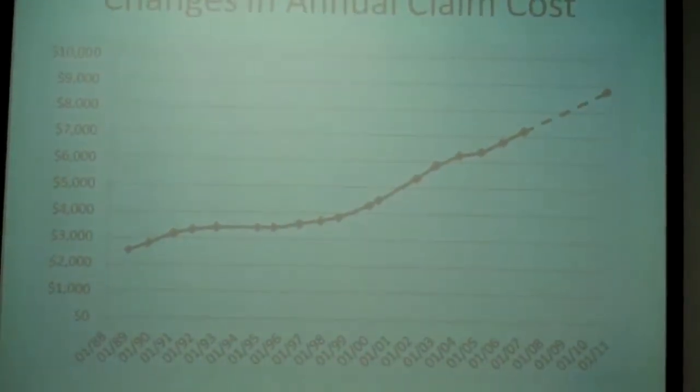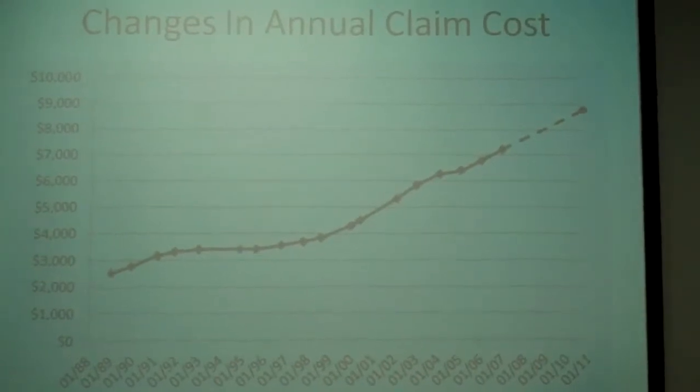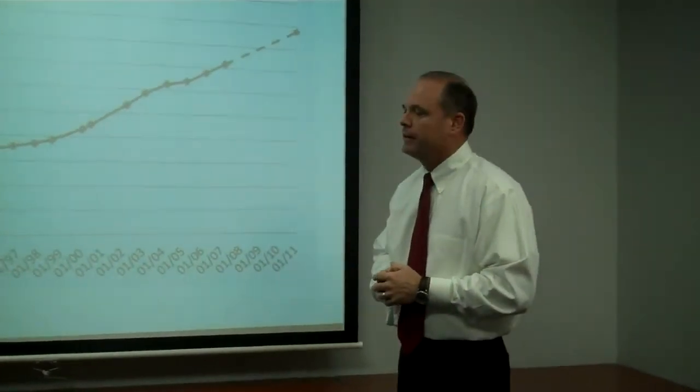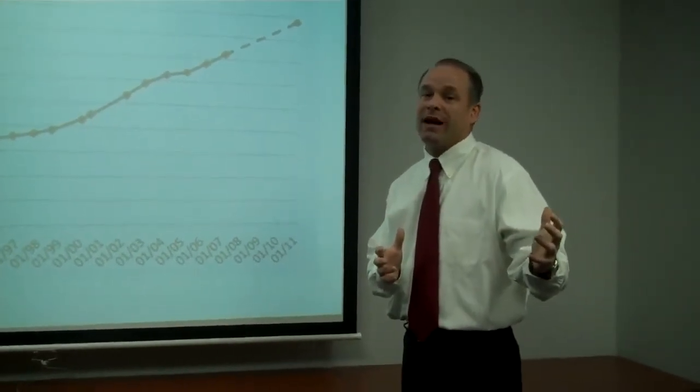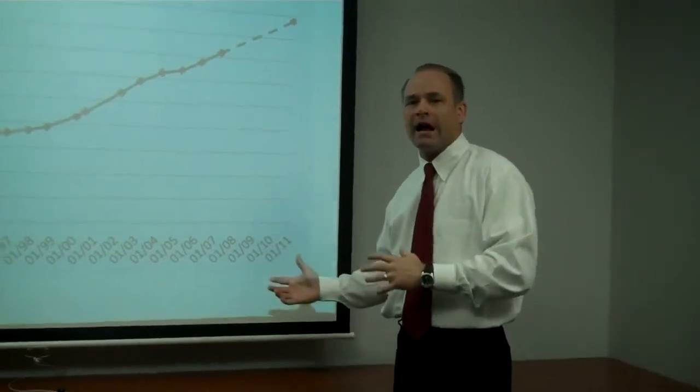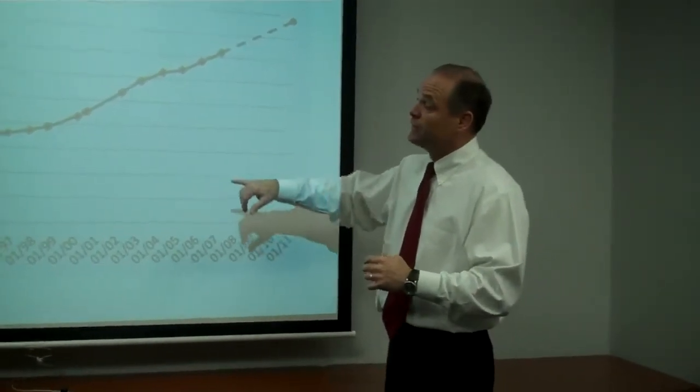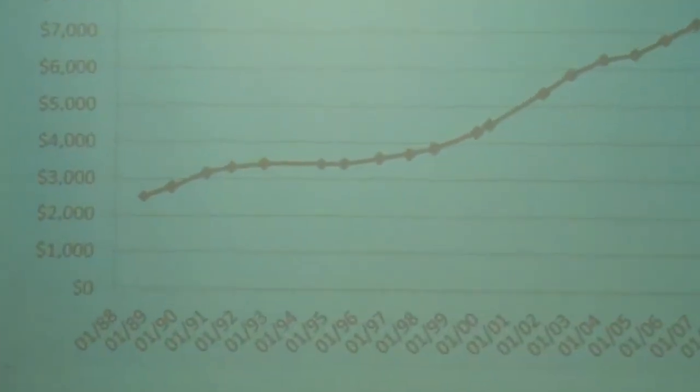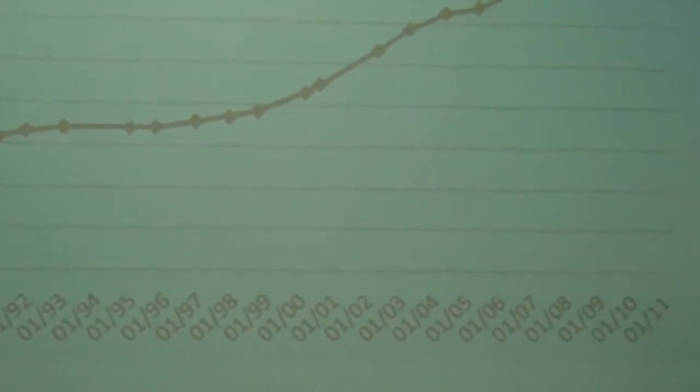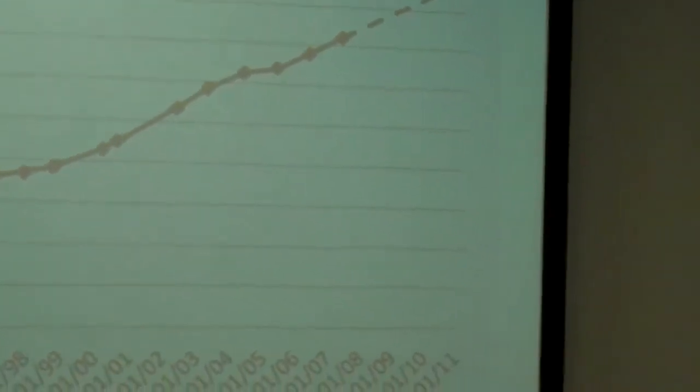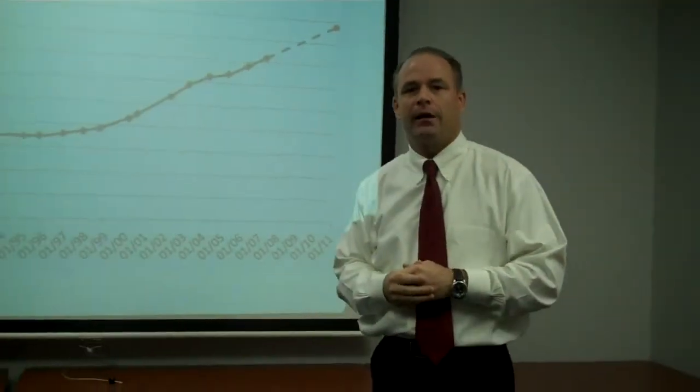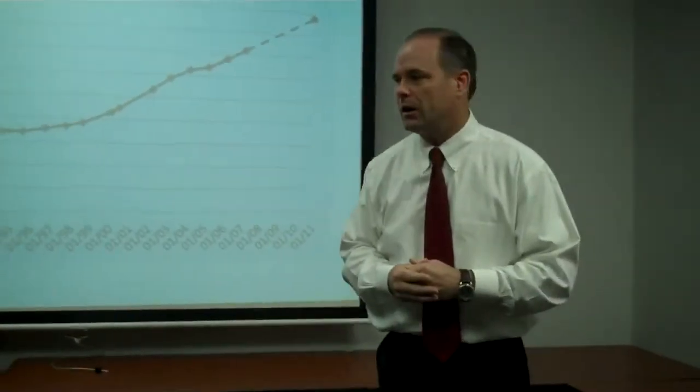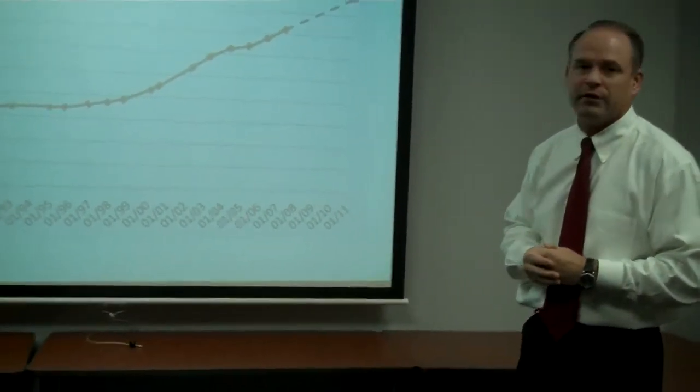Lastly, what we wanted to show you is a slide on medical inflation. This is the reason that NCCI is making a split point change. Medical inflation is running 8%, 9%, 10% a year. The formula is antiquated enough at this point in time with a $5,000 split point that something had to be done to reflect a more accurate experience mod number. As you can see, medical inflation starting in January of 1988 to fully January of 2011 has increased dramatically over that time from $2,500 to about $9,000 for the same claim treated in 1988.